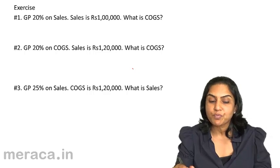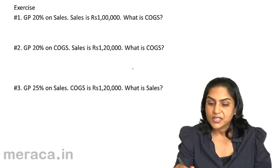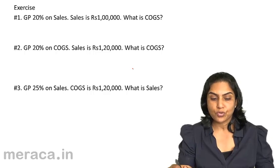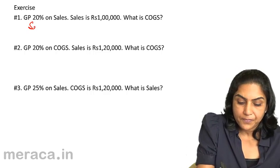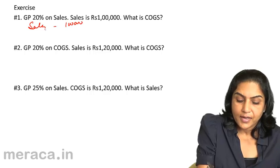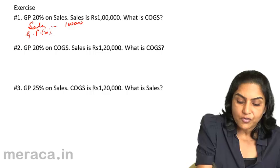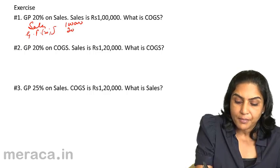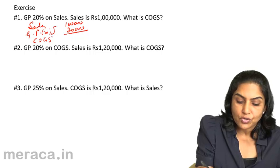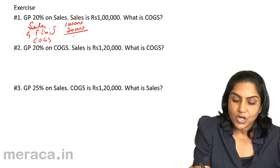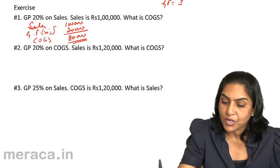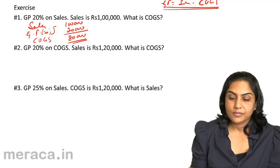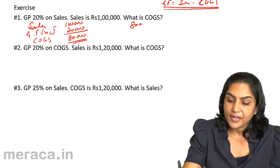In the first exercise, we have a gross profit of 20% on sales, and sales is 1 lakh. What is the cost of goods sold? Sales is 1 lakh. Gross profit is 20% of 1 lakh, which is 20,000. Therefore, cost of goods sold is sales minus gross profit, which is 80,000.